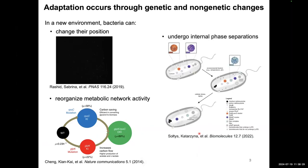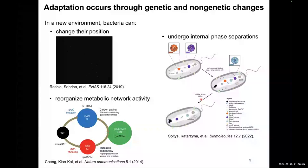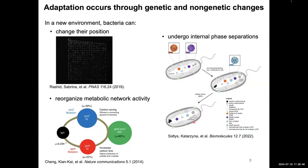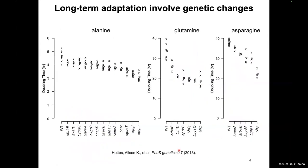Another example is where cells can undergo internal phase separation. In optimal growth conditions, there are biomacromolecular assemblies inside bacterial cells. When they are faced with stress or aging, these condensates can become more solid-like. All these examples are non-genetic changes.